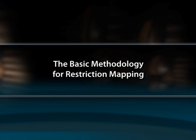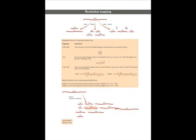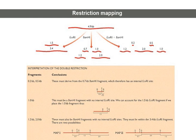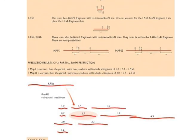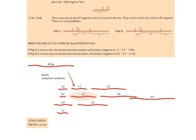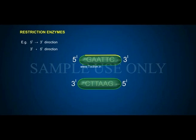The basic methodology for restriction mapping: the simplest way to construct a restriction map is to compare the fragment sizes produced when a DNA molecule is digested with two different restriction enzymes that recognize different target sequences. For example, to map the restriction enzymes EcoR1 and BamH1 sites on a linear DNA molecule of 4.9 kb, the DNA molecule is digested with just one enzyme. For example, EcoR1 always cuts at the sequence G-A-A-T-T-C or C-T-T-A-A-G.